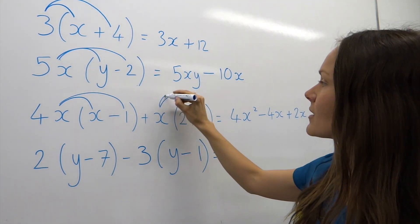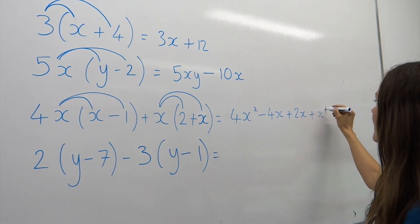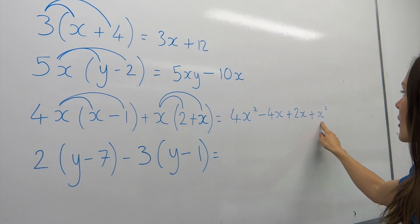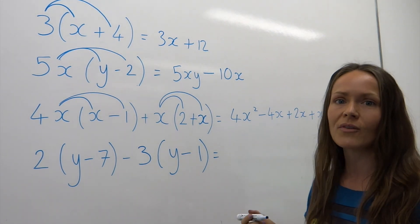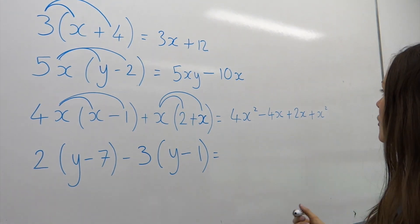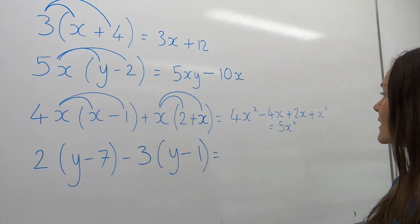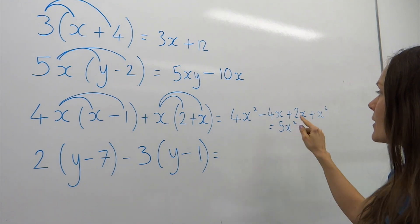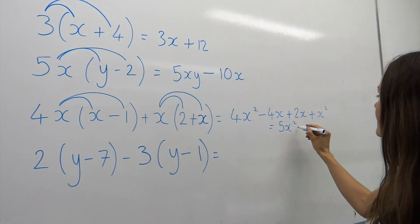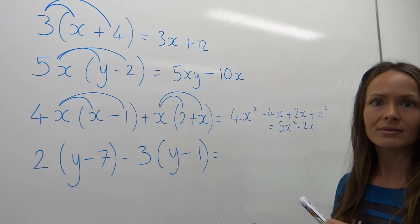And lastly, x multiplied by x is x squared, and again it's positive, so I write plus x squared. Let's look at these terms. We've got an x squared term here and another one here, so I can add these together. I can simplify my answer. 4x squared plus 1x squared gives me 5x squared, so I can write 5x squared there. And the same thing with these two. If I've got negative 4x and I add 2x, it gives me negative 2x. And now that's finished. You can't add or subtract x squared and x.